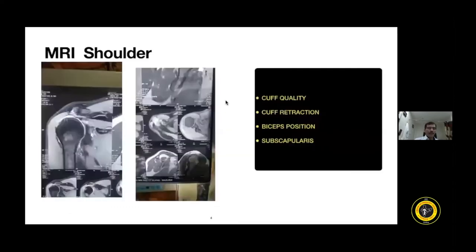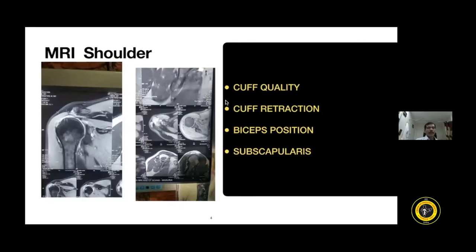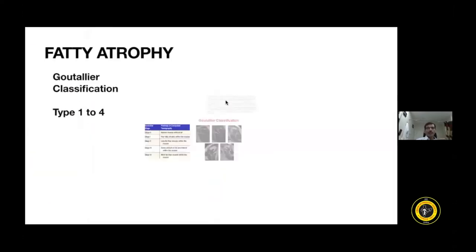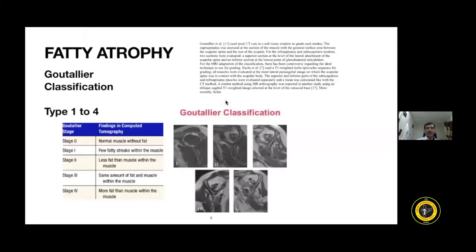On MRI, the most important finding is retraction of the cuff down to the glenoid level. Look at cuff quality on the sagittal view — the cuff is replaced with fatty tissue. Also look for biceps position, as it is often subluxed in massive cuff tears, and observe the subscapularis. Regarding fatty atrophy, using the Goutallier classification from stage 0 to 4: stage 0 is normal, stage 1 is fatty streaks, stage 2 is less fat than muscle, stage 3 is equal fat and muscle, and stage 4 is more fat than muscle. Stages 3 and 4 are considered quite bad.